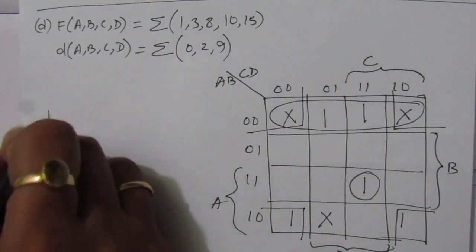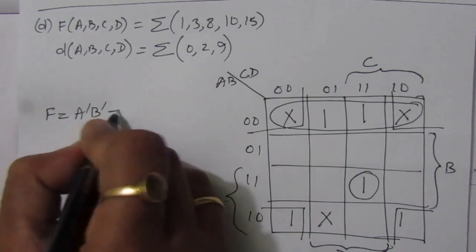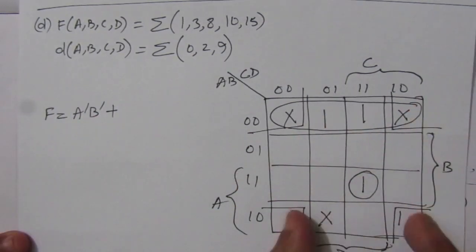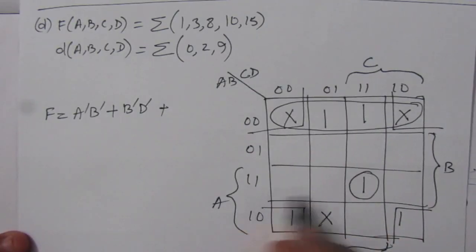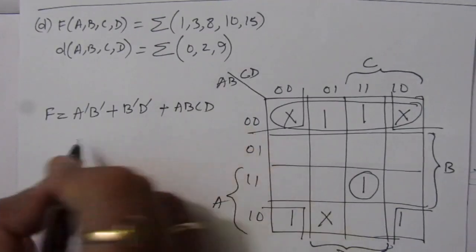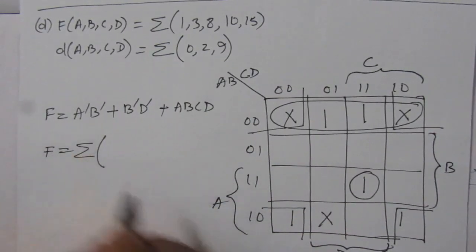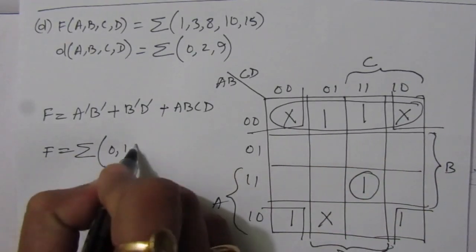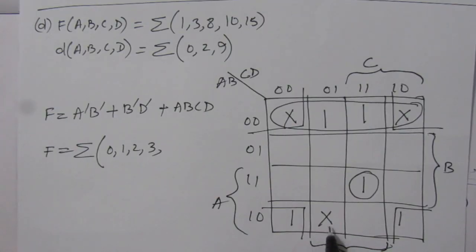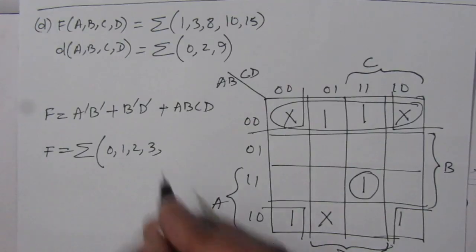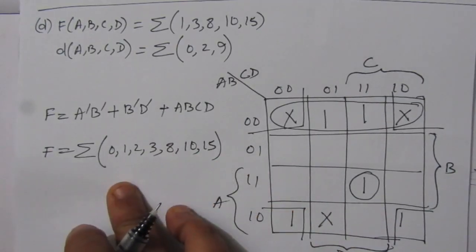We will have three terms. F equals: from the first term we get āb̄; from all the corner values we get b̄d̄; from the third term we get abcd. So the simplified Boolean expression is āb̄ + b̄d̄ + abcd. Expressing in sum of minterms: positions 0, 1, 2, 3 from the first term; 8 and 10 from the corner grouping; and 15. So the simplified sum of minterms expression is Σm(0,1,2,3,8,10,15).